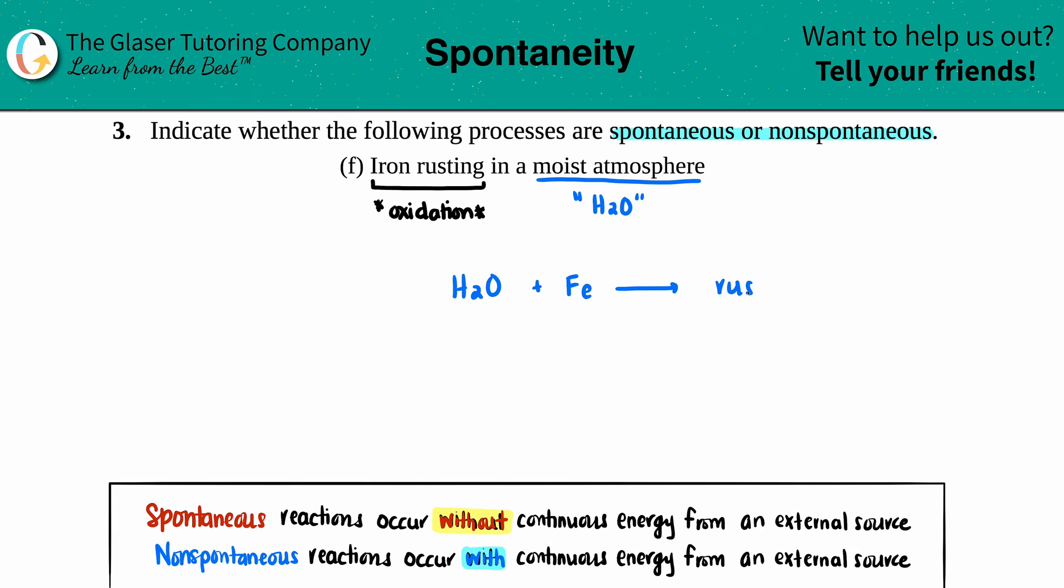Just know that this is not a balanced equation, not a correct balanced equation in chemistry terms. This is just simplicity, so that if you have water and you have iron, that iron is going to rust. Those are the special conditions.